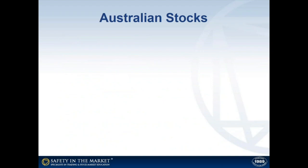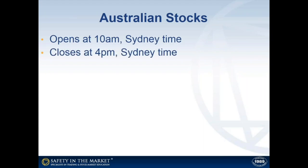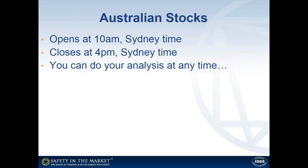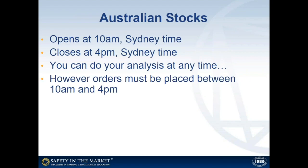If currencies aren't for you, there are lots of stock markets to choose from. If you're living in Australia you can trade Australian stocks, but you can trade many others as well. The Australian Stock Exchange opens at 10 a.m. Sydney time and closes at 4 p.m., giving you a six-hour window to execute your trades. Orders must be placed between 10 a.m. and 4 p.m. If you're too busy during the working day to get in front of a computer or contact your broker during that window, you'll probably need to put Australian stocks on the back burner and look for another market.